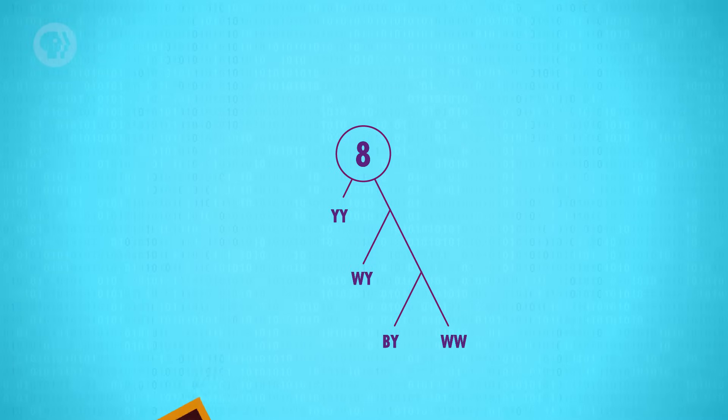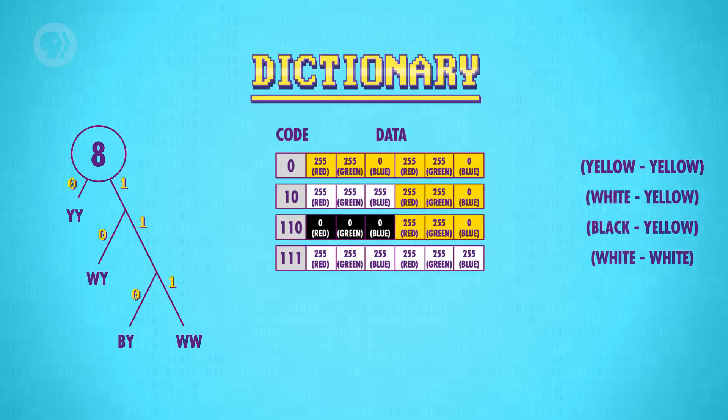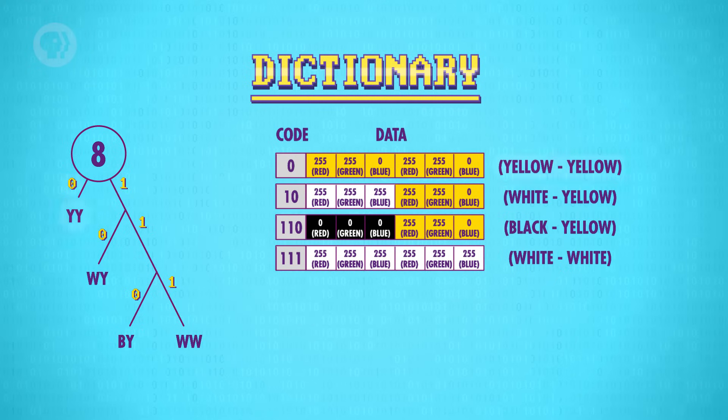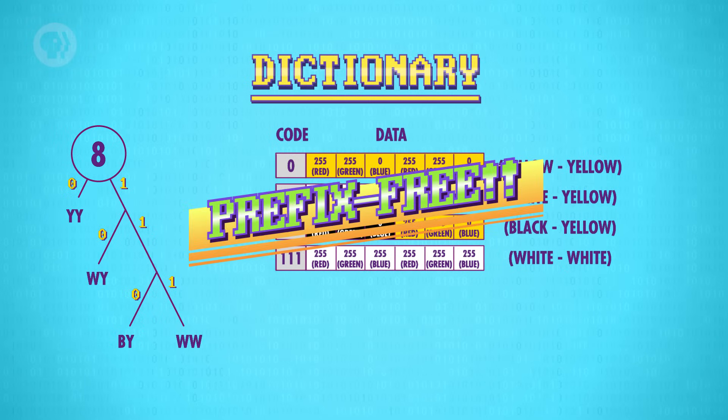So now we have a tree, but you may be wondering how this gets us to a dictionary. Well, we use our frequency-sorted tree to generate the codes we need, by labeling each branch with a zero or a one. With this, we can write out our code dictionary. Yellow yellow is encoded as just a single zero. White yellow is encoded as one zero. Black yellow is one one zero. And finally, white white is one one one. The really cool thing about these code words is that there's no way to have conflicting codes, because each path down the tree is unique. This means our codes are prefix-free. That is, no code starts with another complete code.